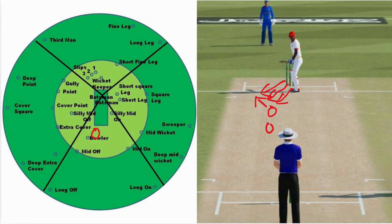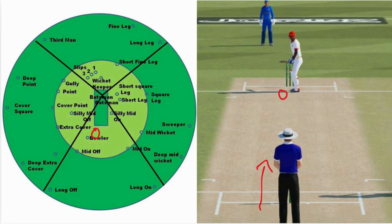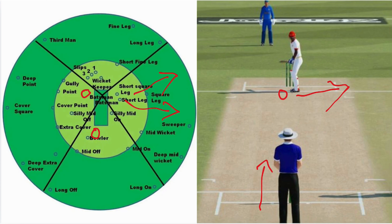If I land the ball in this good length area, it is going to be very unplayable. From a batter's perspective, if I misjudge this ball during this run-up, it is going to create a lot of angles. If Rohit Paudel keeps a fielder in this particular area, the batter will be forced to play to the leg side — short leg and short square leg. There is a high chance the batter might misjudge the pace and get bowled.